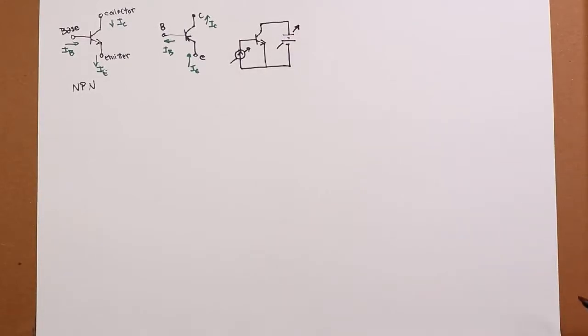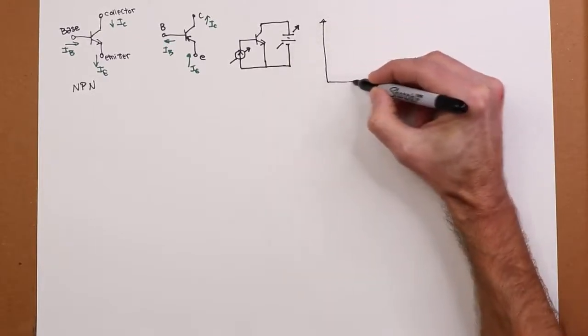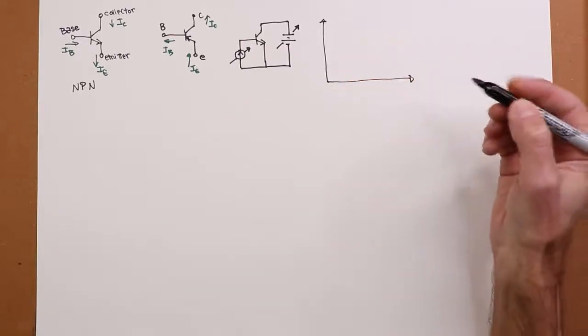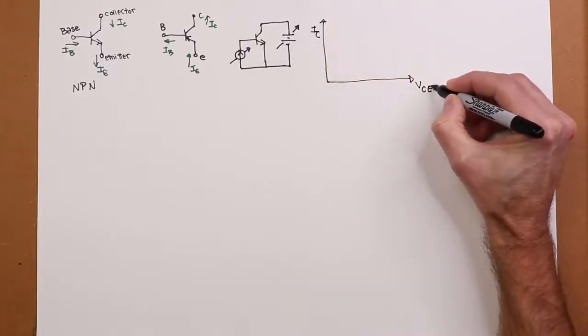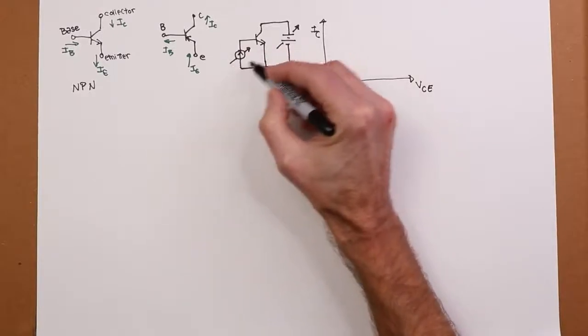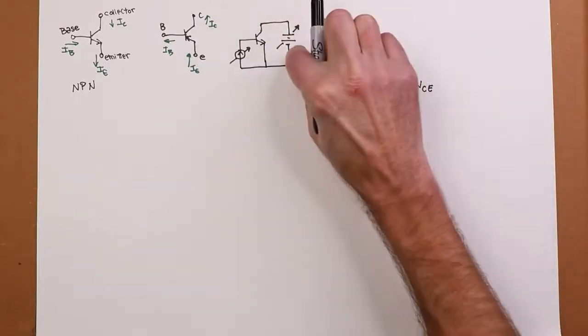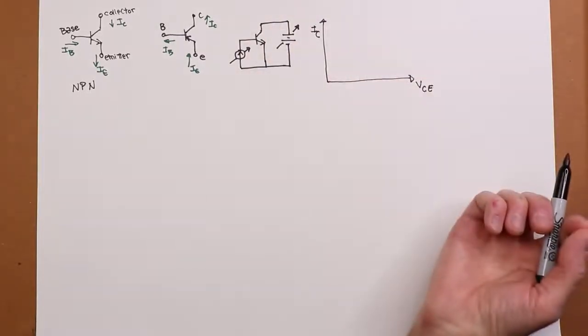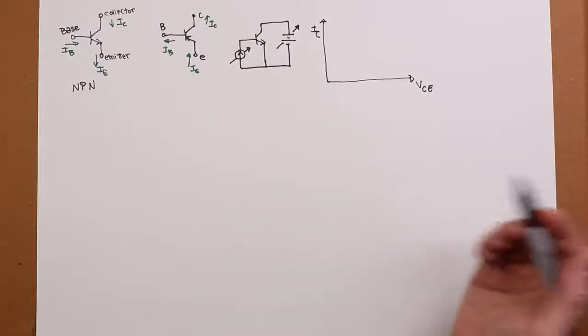So what do we see happening here? Well, what we're going to do is we're going to start off with a base current that's zero, and I'm going to plot the collector current versus the collector emitter voltage. So if you think of a zero amp current source, or more simply just opening up the base so it's not connected to anything, if we start the collector supply at zero and turn it up, what do we wind up seeing?